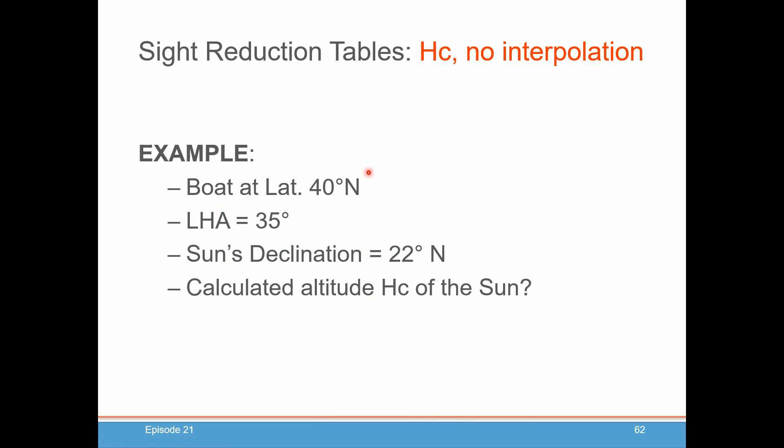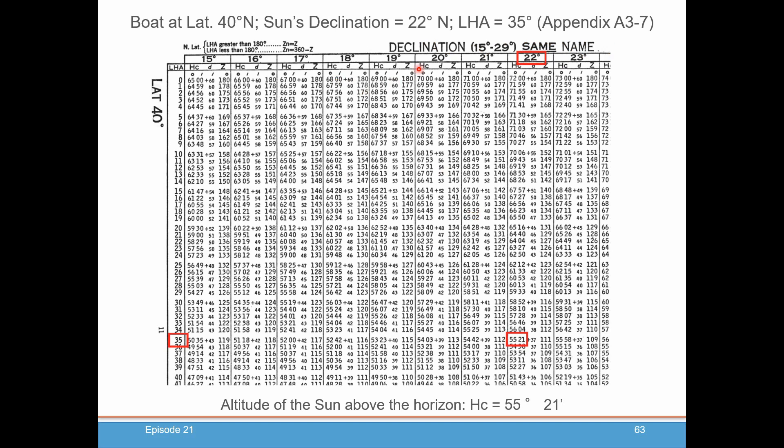In this case, we've got north latitude boat, north declination sun. So now we're going to be looking at same name. We've got our declination of the sun at 22 degrees, LHA of 35 degrees. We see where they cross. And it tells us that the sun altitude above the horizon at that location is 55 degrees and 21 minutes.